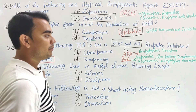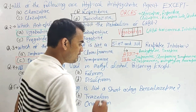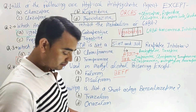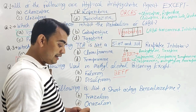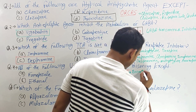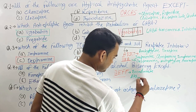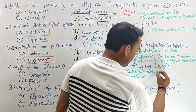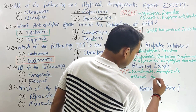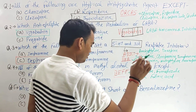Next question: all of the following are used in methyl alcohol poisoning except. During methyl alcohol poisoning, remember the mnemonic BEF. B for bicarbonate — bicarbonate electrolyte. E for ethanol. F for fomepizole. And another F for folinic acid, also known as leucovorin.